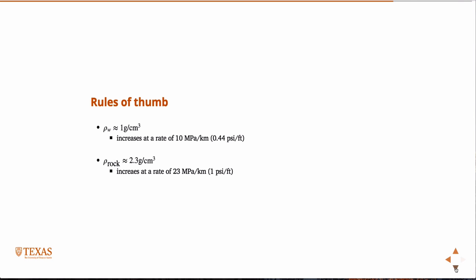And the density of rock, this is a little harder to memorize, but 2.3 grams per cubic centimeter increases at a rate of 23 megapascal per kilometer. But this is easy. We kind of get lucky here. The density of rock, of course the density of rock is not constant, but it's approximately a good approximation to say there's one PSI per foot.